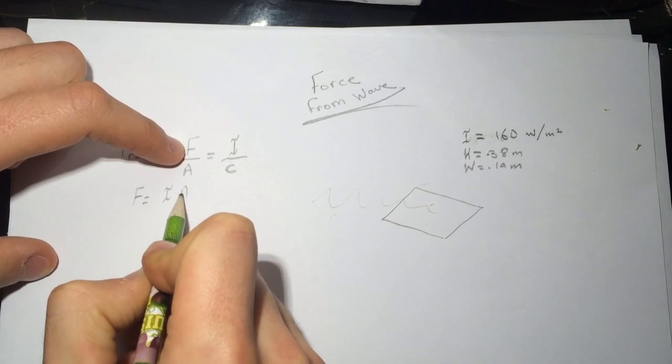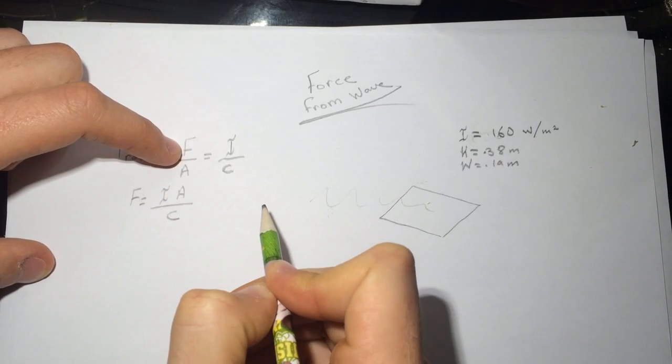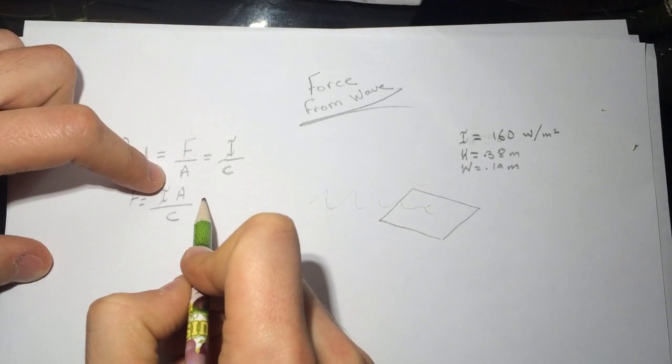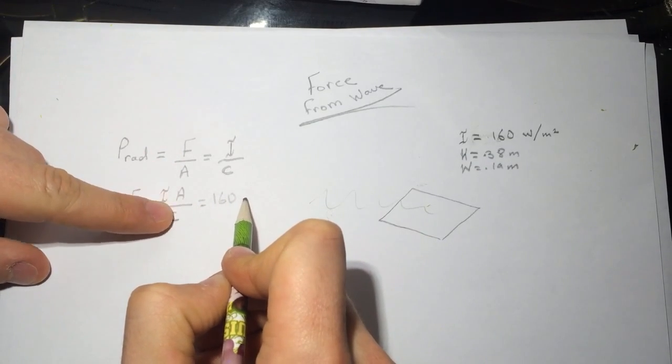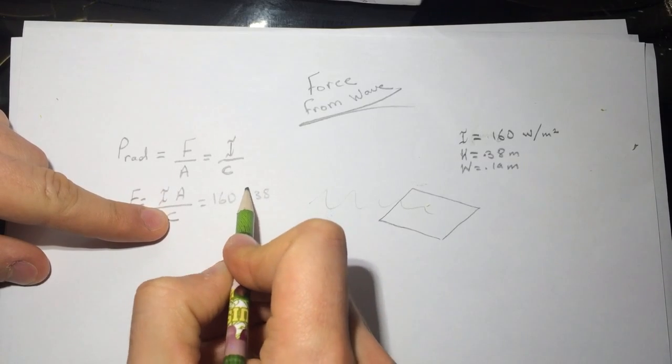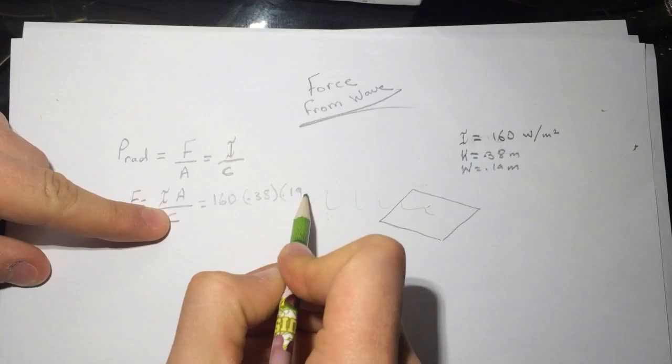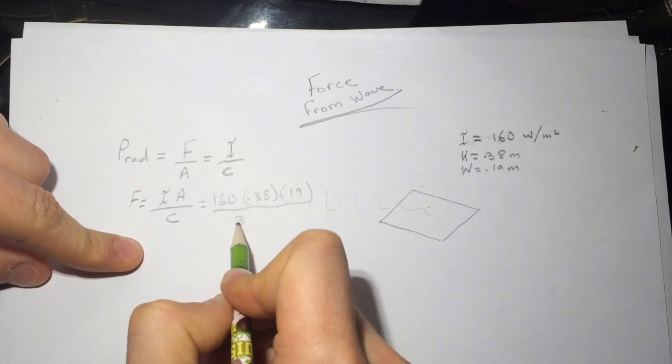So I is 160 and A is 0.38 times 1.19 divided by 3 times 10 to the 8th.